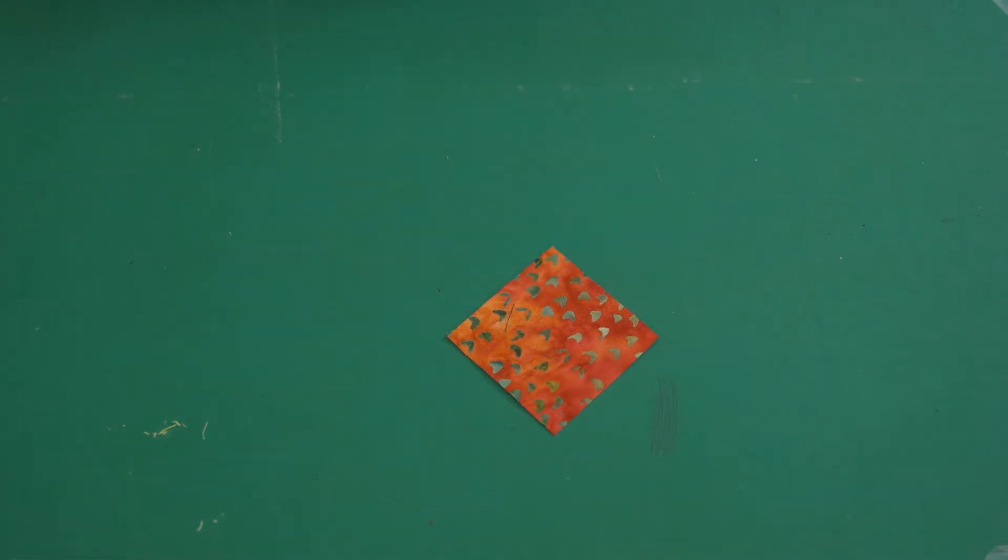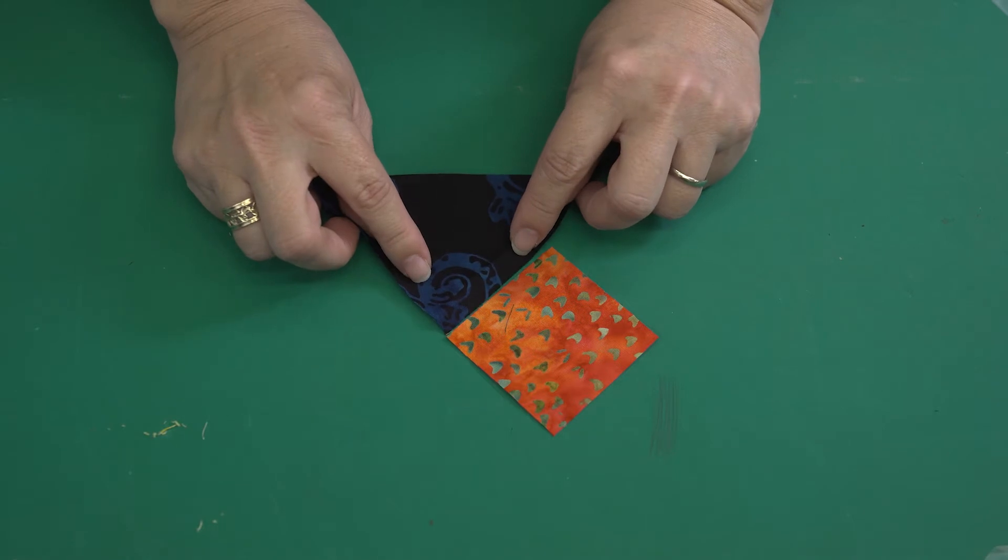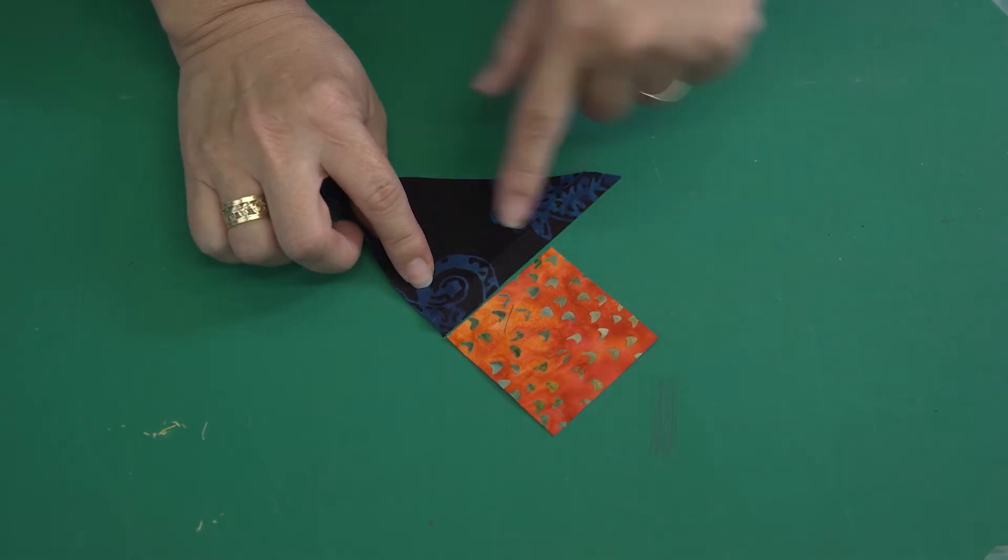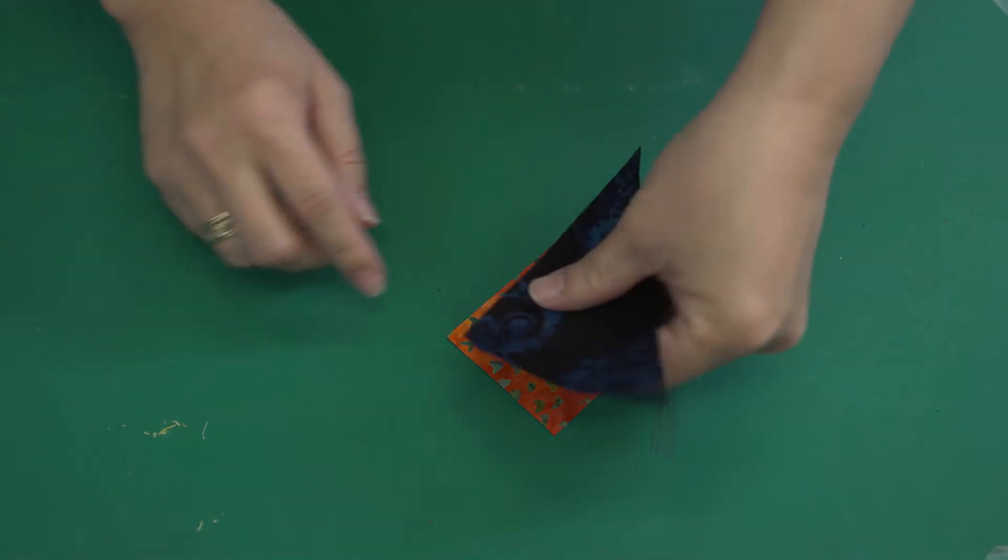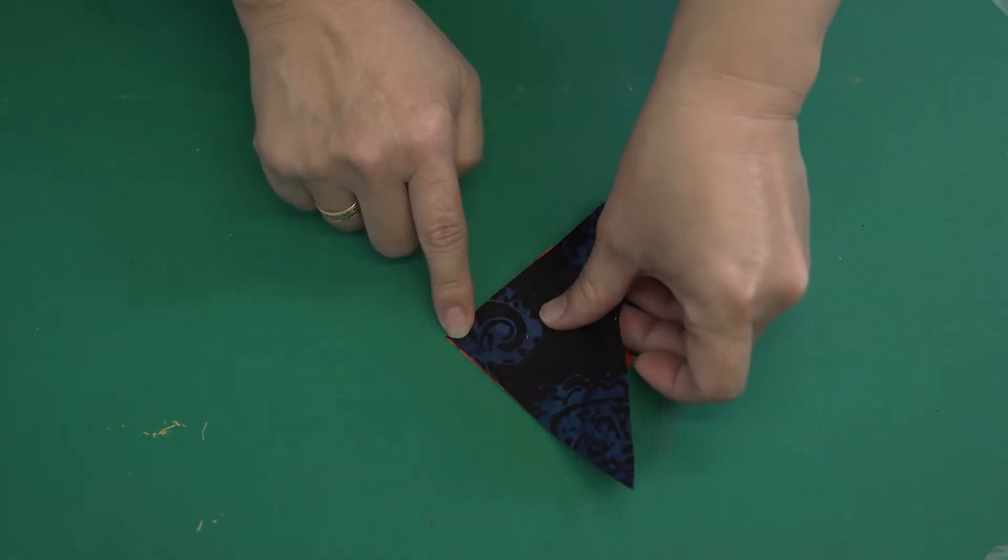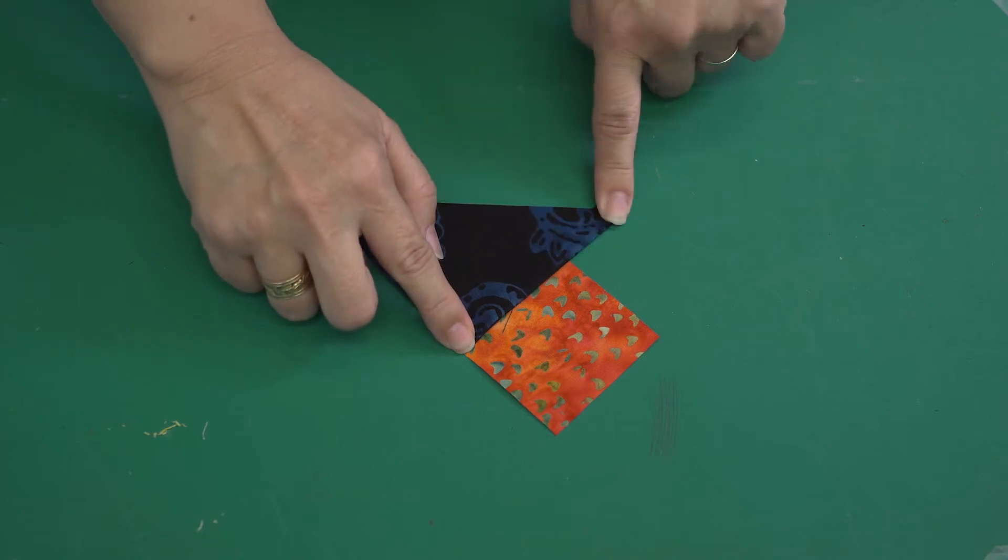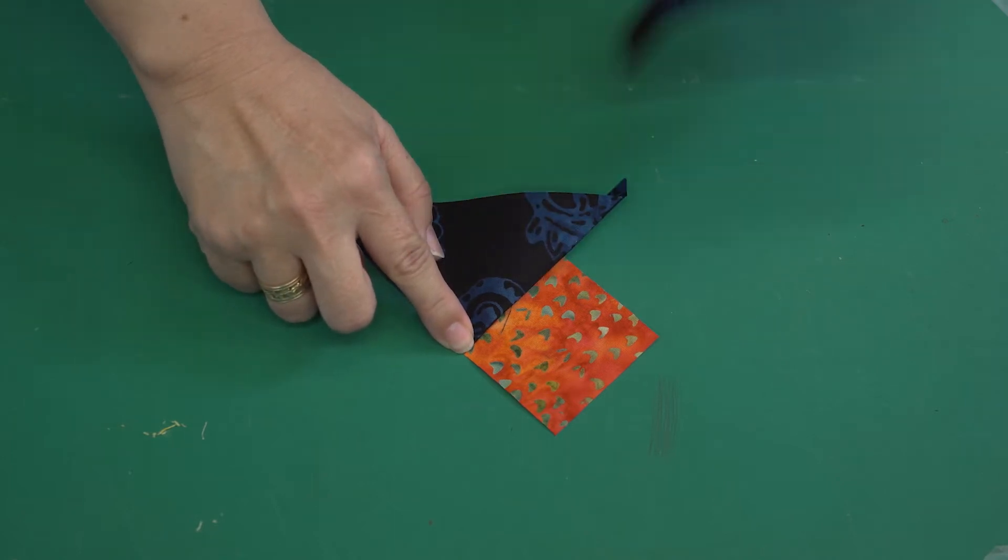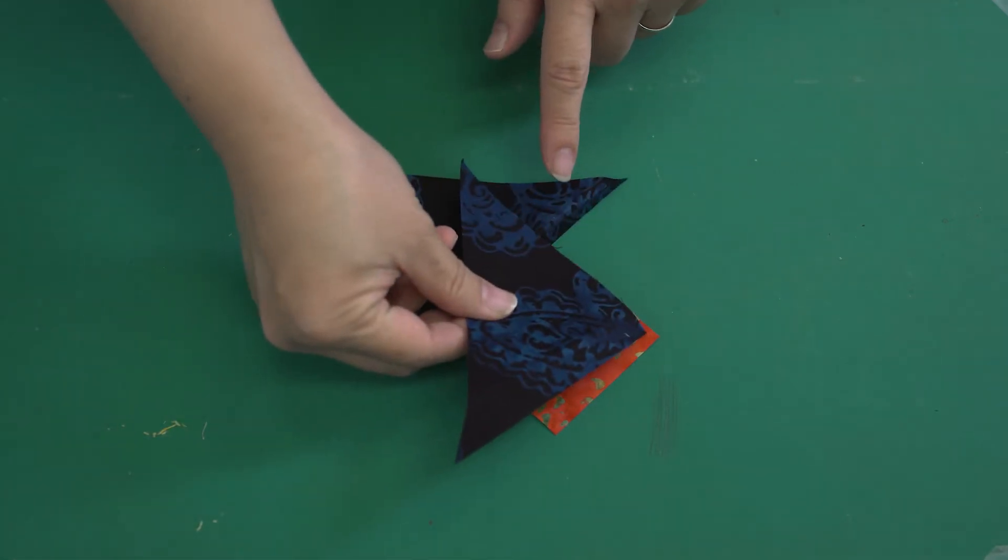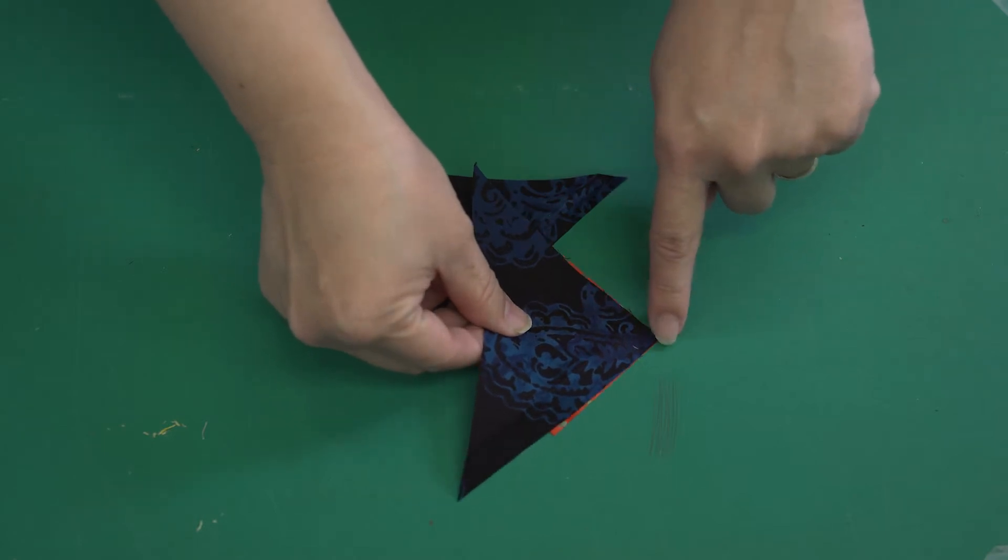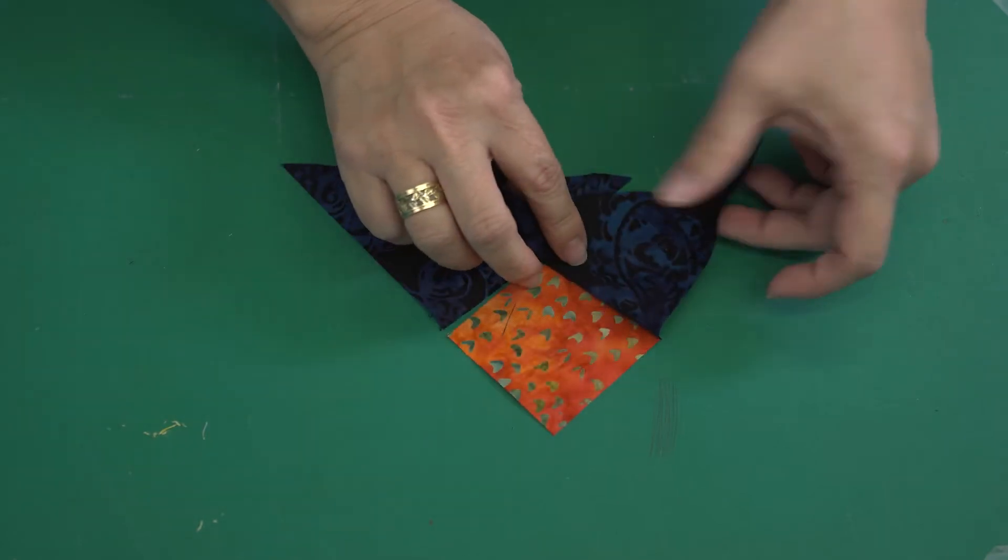You're going to start with a square and you're going to sew a triangle to two sides. You're going to line up the corners of your triangle and your square before sewing.